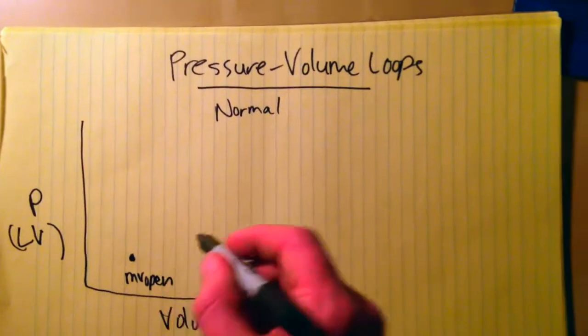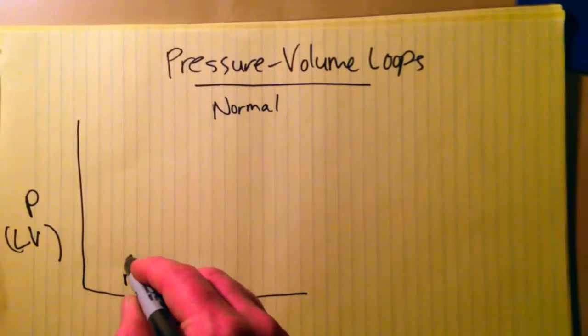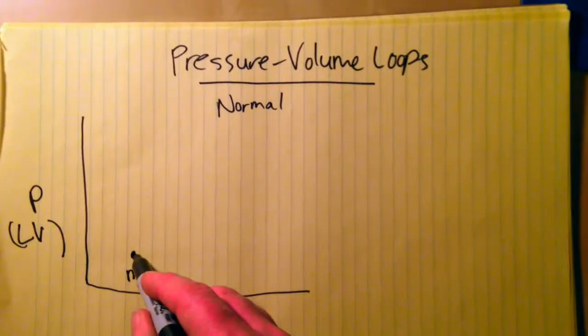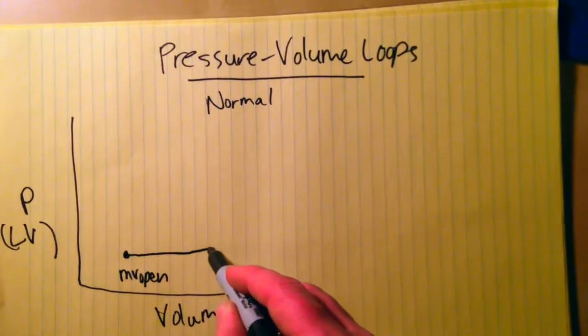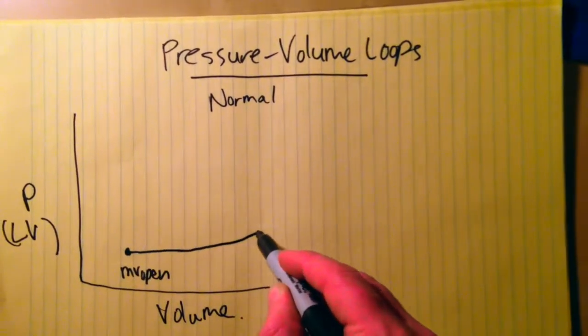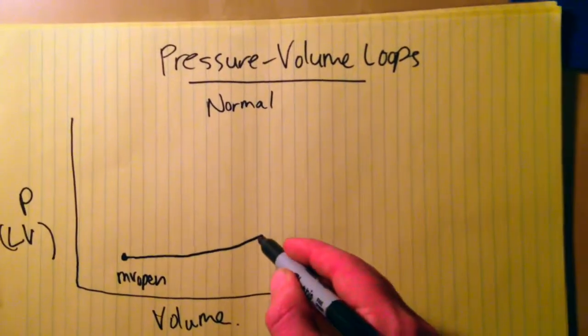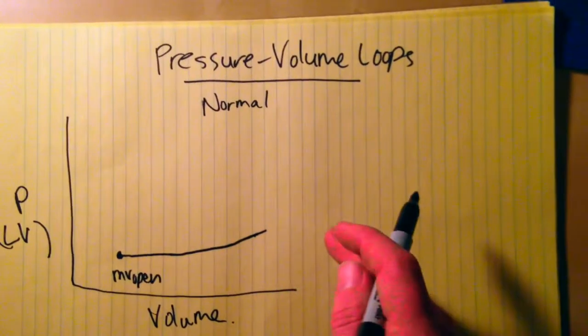When this mitral valve opens, blood will of course flow from the left atrium into the left ventricle, increasing the volume in the left ventricle. It's mostly flat but then you get a slow uptick in pressure as the ventricle fills until you reach the end of diastole.